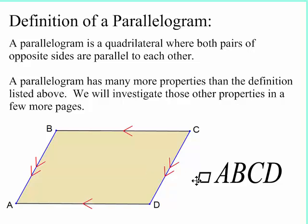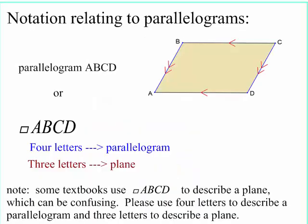And the notation here, look, a little parallel symbol, and all four letters of the vertices of this parallelogram, ABCD. Okay, so we can write that notation of this parallelogram ABCD by either writing the word parallelogram followed by those letters, or the symbol of a parallelogram in those four letters. Now, we're using all four letters to define the parallelogram.